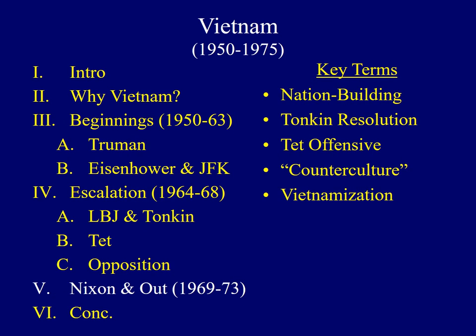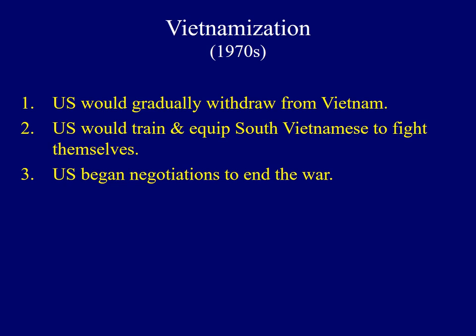Richard Nixon developed his policy to get the United States out of Vietnam, called Vietnamization. First, the United States would gradually withdraw troops. Second, the Americans would train and equip the South Vietnamese to fight on their own. Third, Nixon hoped to begin negotiations with the North Vietnamese to end the war. The problem was that the North Vietnamese knew how unpopular the war was in the United States, and realized it was in their best interest to extend it — so for quite some time they refused to negotiate.